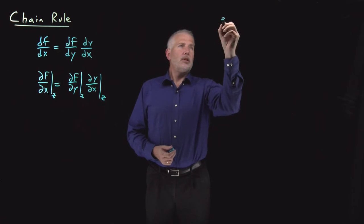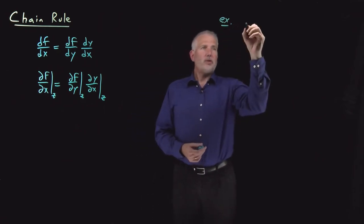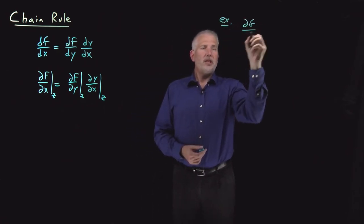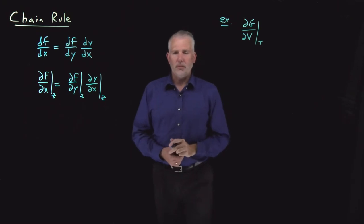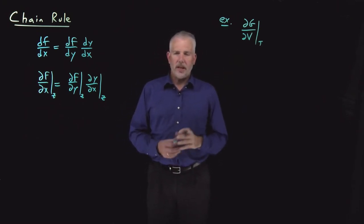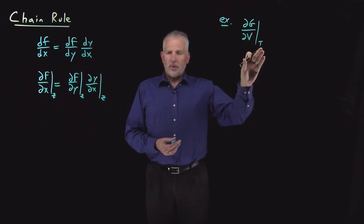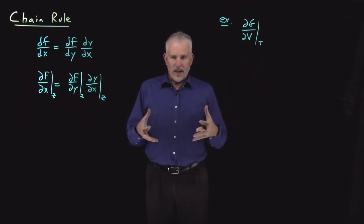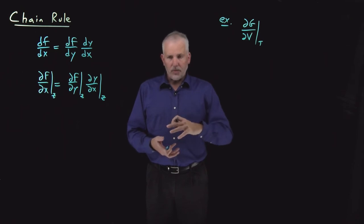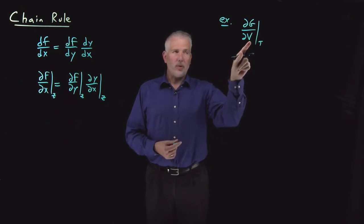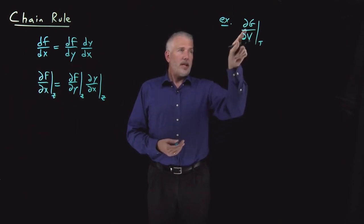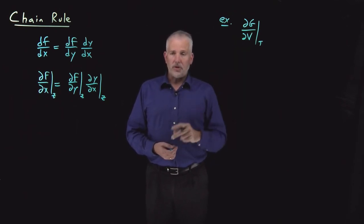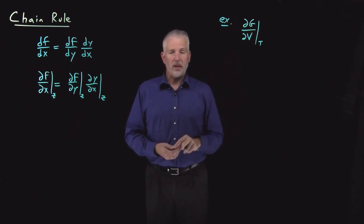For example, let's say we're interested in how quickly the Gibbs free energy changes as we change its volume isothermally. That's a reasonable thing to consider — we have some object at constant temperature, and somehow its volume changes, whether it's a box of gas or a solid object being compressed. As the volume changes, we might want to know how much the free energy is changing. This is not a derivative we know anything about yet, because the natural variables of G are pressure and temperature, not volume.